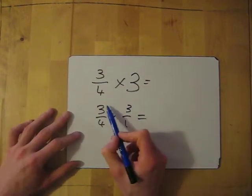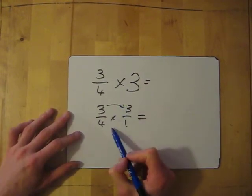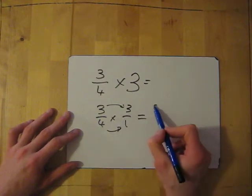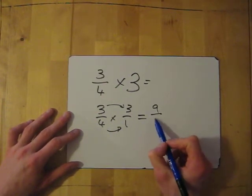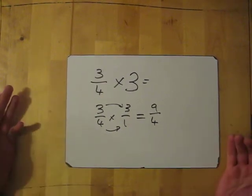And then all you do is multiply the top two numbers and then multiply the bottom two numbers. So 3 times 3 equals 9, 4 times 1 equals 4. And it's as easy as that.